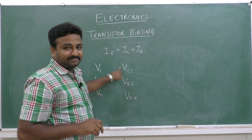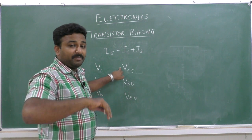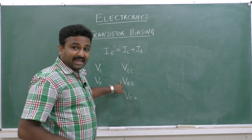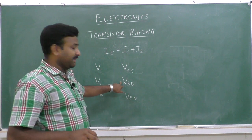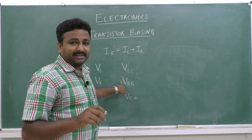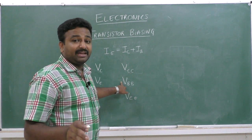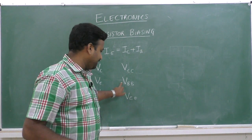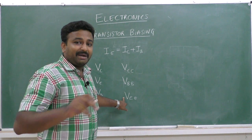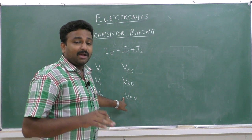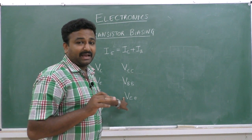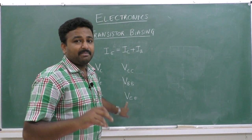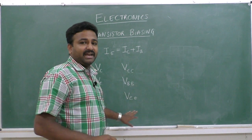If the positive terminal of the power supply is connected to the collector, it is +VCC; if the negative terminal is connected, it is −VCC. Similarly, if the positive terminal is connected to the base, it is +VBB; if the negative terminal is connected, it is −VBB. For the emitter terminal, if positive is connected it is +VEE, and if negative is connected it is −VEE.